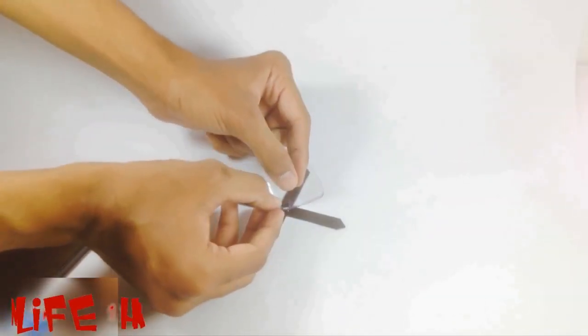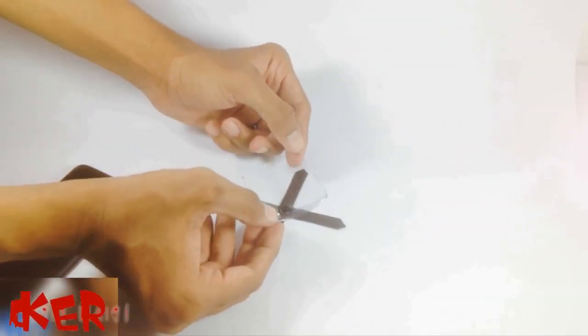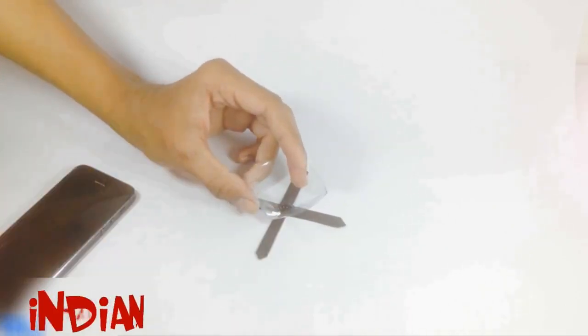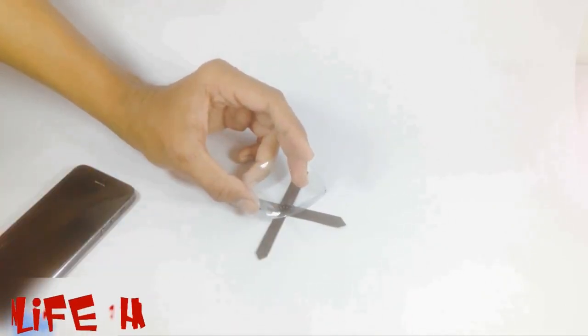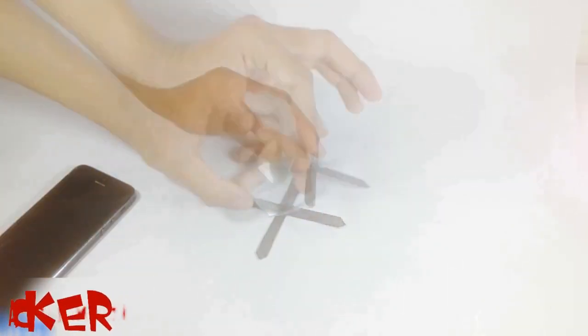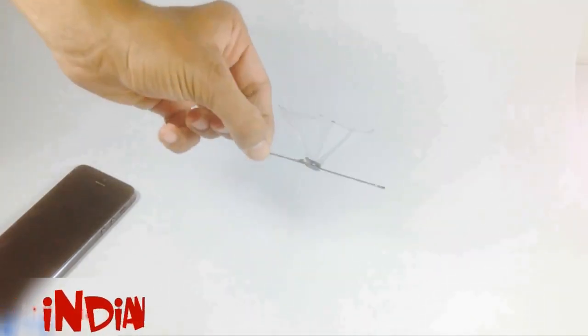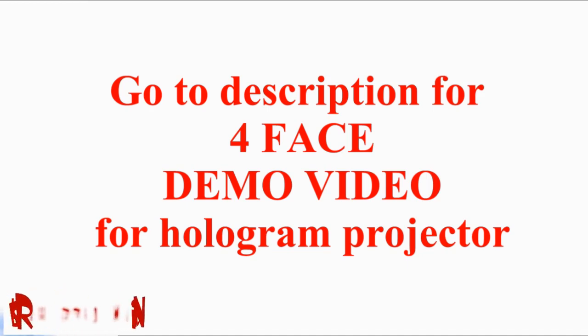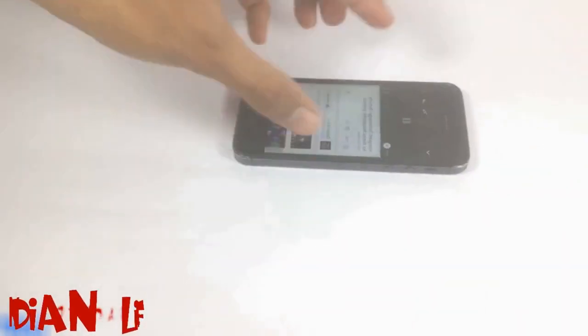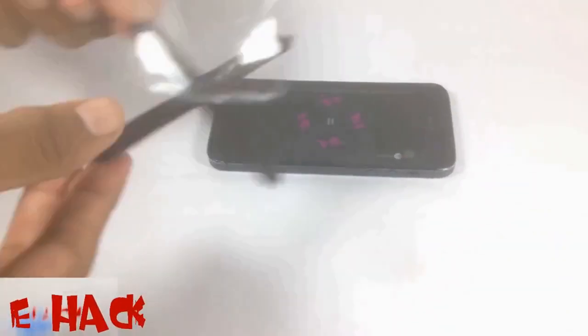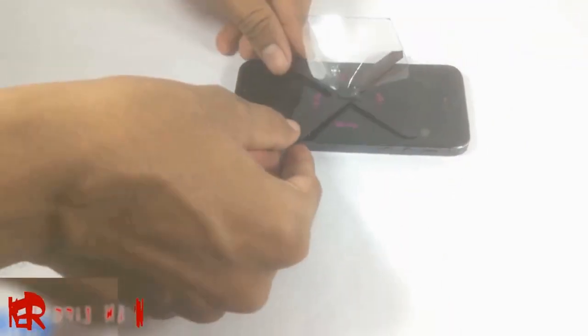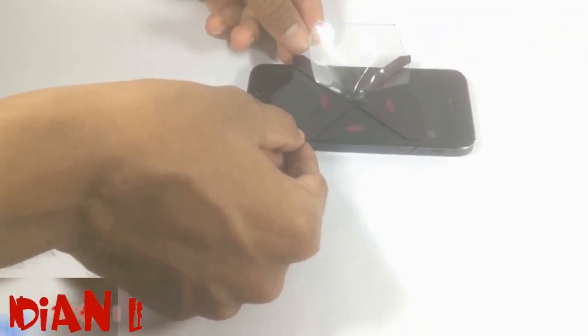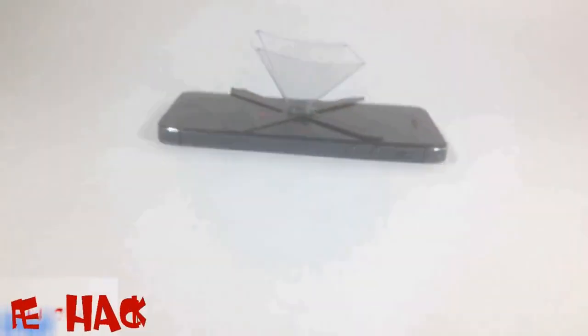Now our holographic projector is ready. Now go to the description of this video and you will find a four-face demo video over there. Play the video and put the holographic projector on the phone and turn off the light.